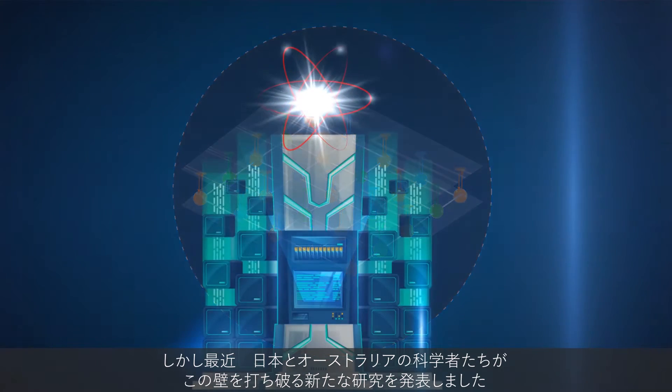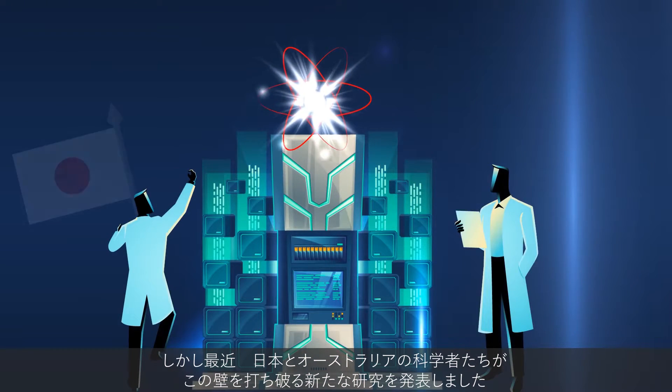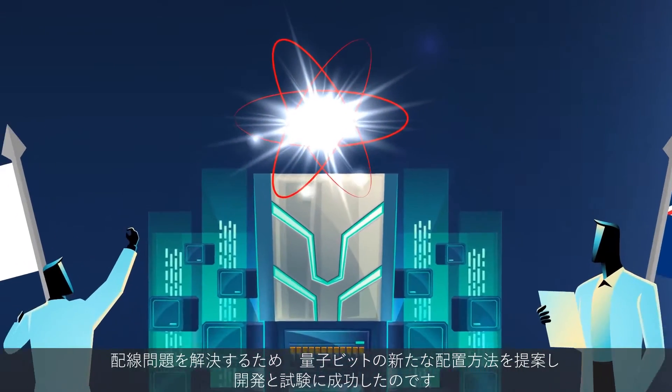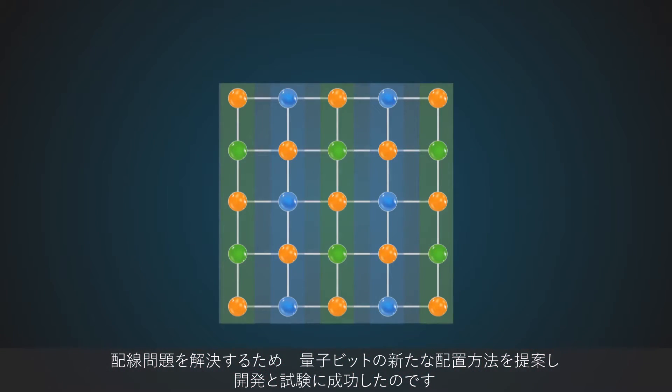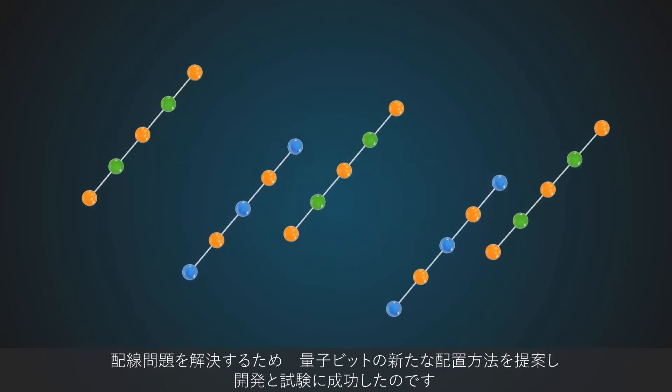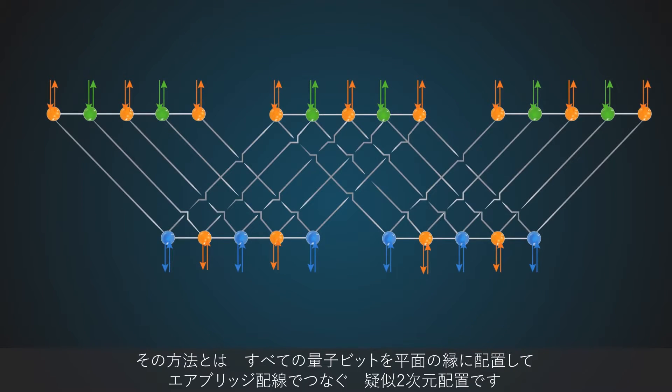A recent study by a group of scientists from Japan and Australia changes this dynamic. The study reveals the development and successful testing of a novel pseudo-2D architecture that solves the wiring problem by placing all qubits at the edge of the network and connecting them through air bridges.